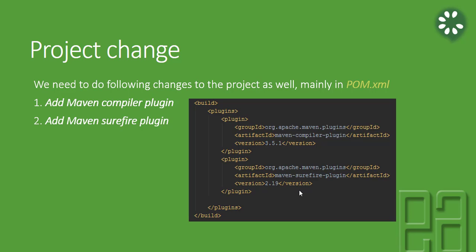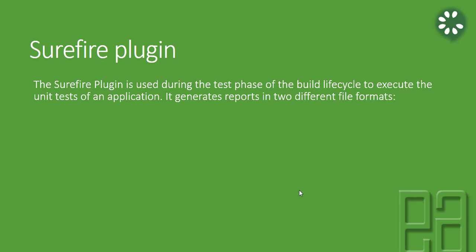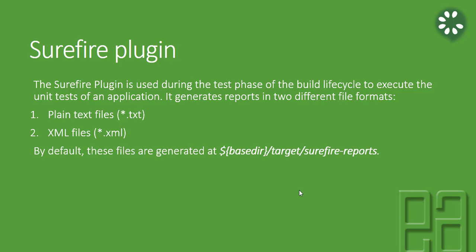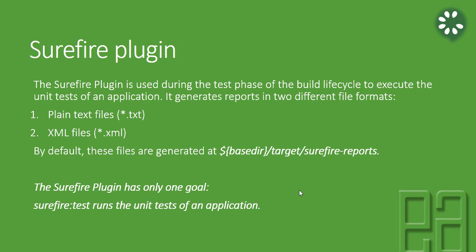We need to add these two plugin dependencies in the pom.xml file. The Surefire Plugin is used during the test phase of the build lifecycle to execute the unit tests of an application. It generates reports in two formats: plain text and XML. Many test reporting plugins use this XML file to generate neat reports. By default, these files are generated at the base directory target/surefire-reports. The Surefire Plugin has only one goal: surefire:test, which just runs the unit tests.